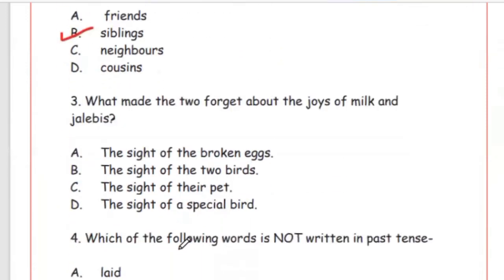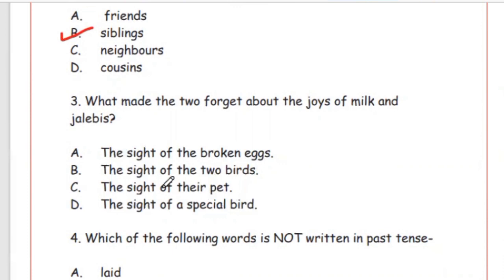Question 3: What made the two forget about the joys of milk and jelly bees? Option A: the sight of the broken eggs. Option B: the sight of the two birds. Option C: the sight of their pet. Option D: the sight of a special bird. The correct answer is Option B, the sight of the two birds.